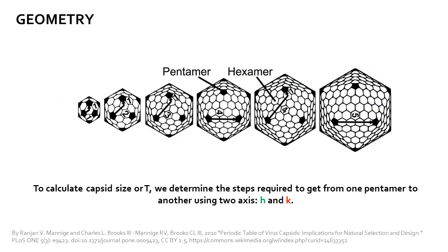To calculate T, we first need to determine H and K, which are vectors along the capsid surface defined by green and red arrows. These vectors originate from the center of any pentagon and are used to measure the distance to the next closest pentagon, or 5-axis of symmetry vertex.